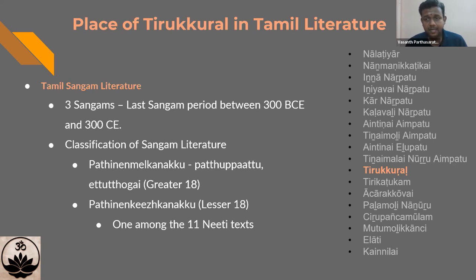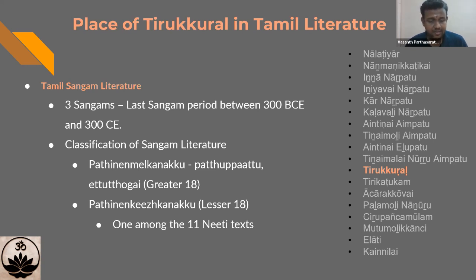The third Sangam period is generally considered between 300 BCE and 300 CE, though a recent excavation near Madurai in south-central Tamil Nadu has now indicated it could actually go back to 800 BCE. So the third Sangam period could have started as early as 800 BCE, giving us roughly a 1,100 to 1,200 year period in which a considerable number of texts were written. The majority of the primary texts are classified as Padinen — meaning 18 — with Mel Kanakku and Kir Kanakku meaning the greater 18 and the lower 18, referring to the size of the texts rather than the greatness of their content.